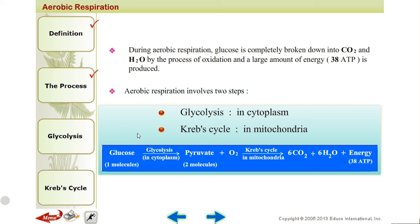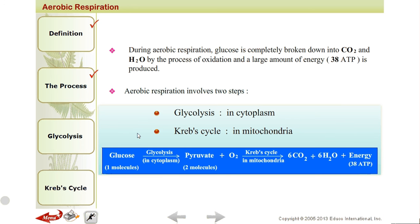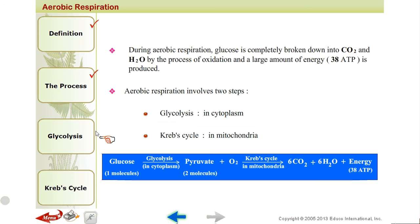One pyruvate plus one pyruvate — two pyruvate molecules are generated, so that the carbon is balanced. Then, pyruvate in the presence of oxygen goes into the mitochondria for the Krebs cycle, producing carbon dioxide, water, energy, and 38 ATP molecules. I hope this is clear to you.